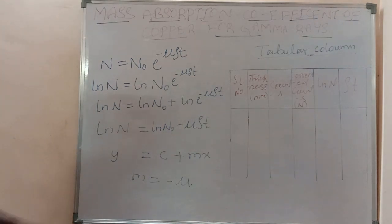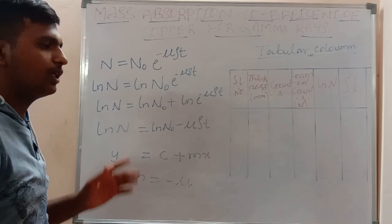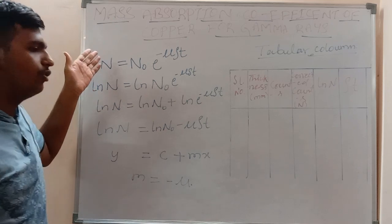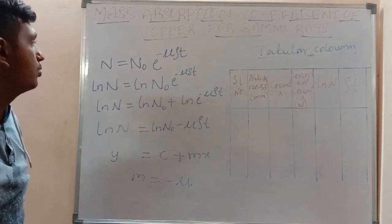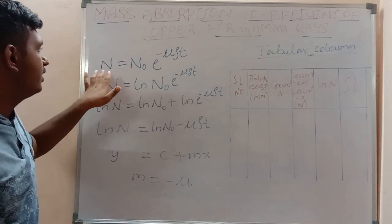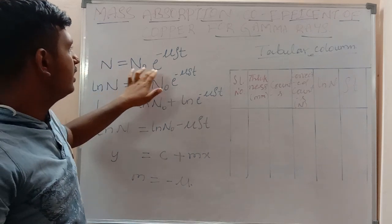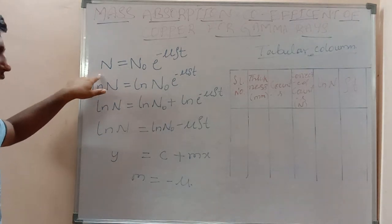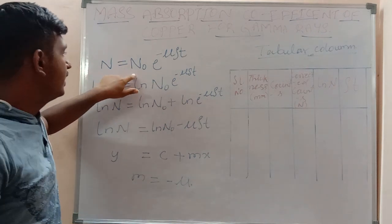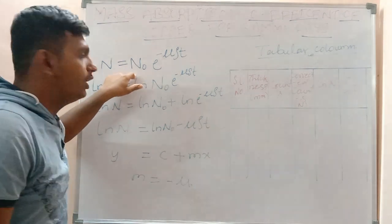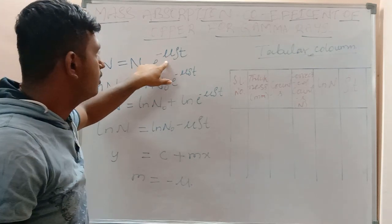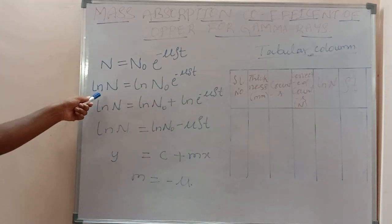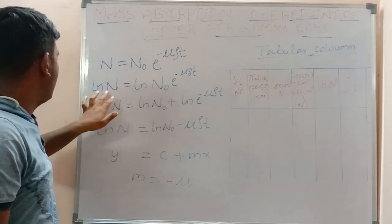We are finding the mass absorption coefficient of copper for gamma rays using the equation: N = N₀ · e^(−μρt), where N is the transmitted gamma rays, N₀ is the initial count of the gamma rays, μ is the mass absorption coefficient, and t is the thickness.